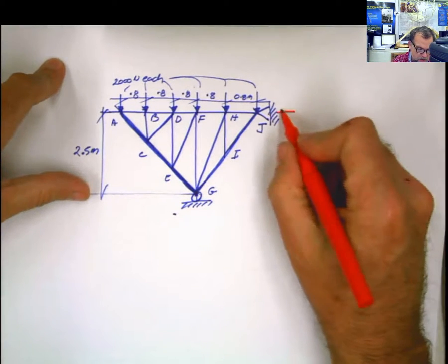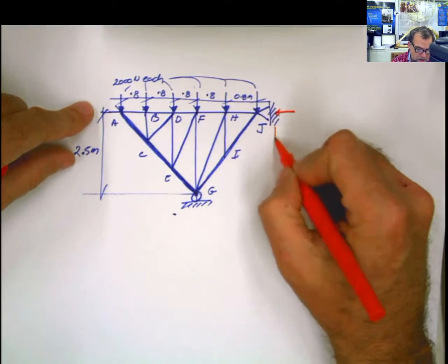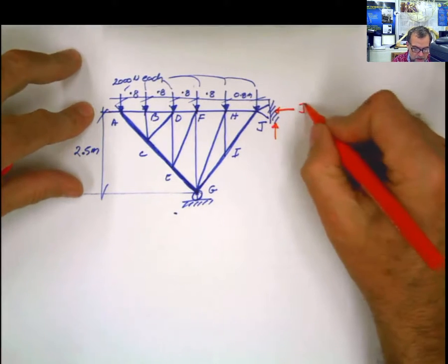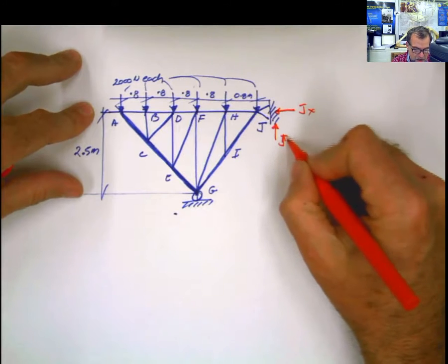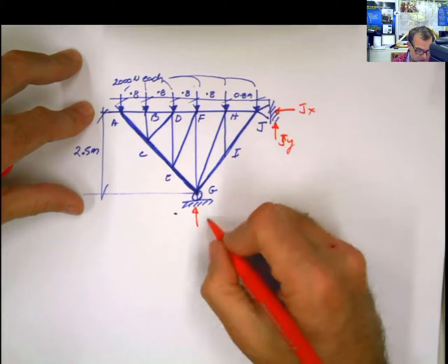And then you start thinking, oh wait a second, if I have a pin support here, then this is going to be one reaction in this way, one reaction in this way. This is going to be Jx and Jy. And this is a pin which is going to produce one reaction in that direction, which is Gy.